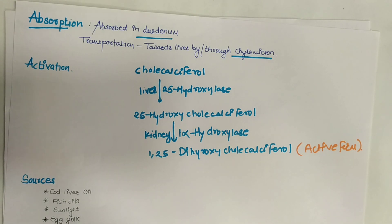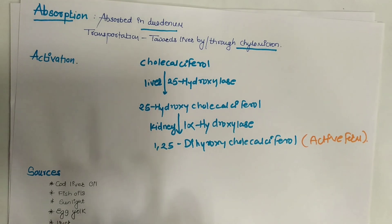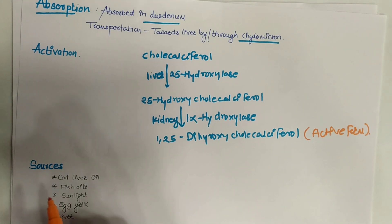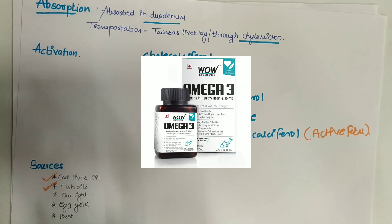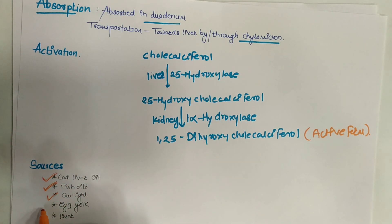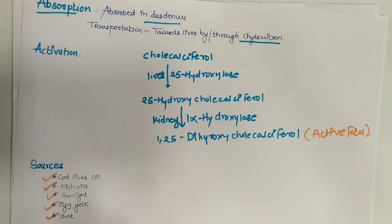The dietary and biological sources from which we obtain vitamin D include cod liver oil, fish oils, sunlight, egg yolk, and liver. These are the major sources of vitamin D.